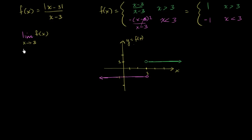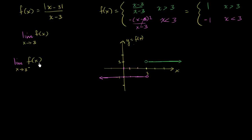So now let's try to answer our question — what is the limit as x approaches 3? Let's think about the limit as x approaches 3 from the negative direction, that is, from values less than 3, approaching from the left. As we start at 0, f of x equals negative 1. At 1, f of x equals negative 1. At 2, negative 1. At 2.99999, f of x equals negative 1. So it looks like it is approaching negative 1 from the left-hand side.